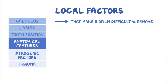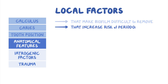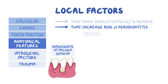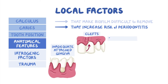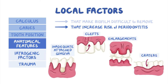There are also anatomical features of the soft tissue that can increase the risk of periodontitis, such as inadequate attached gingiva, gingival clefts, enlargements, and craters. These deformities create a favorable environment for bacterial growth and eventual plaque formation.